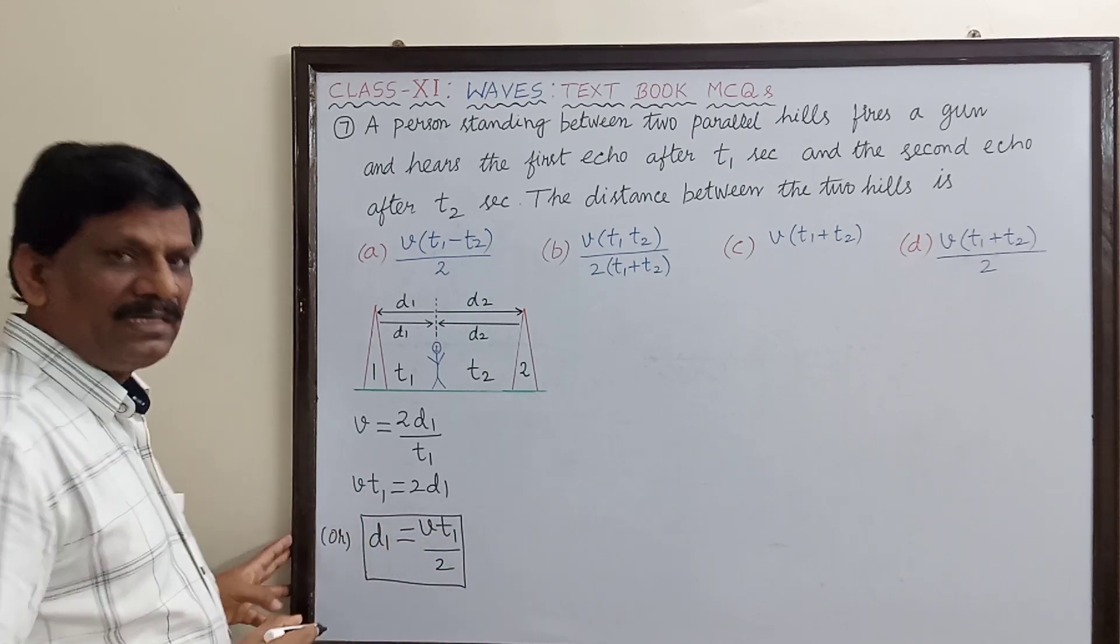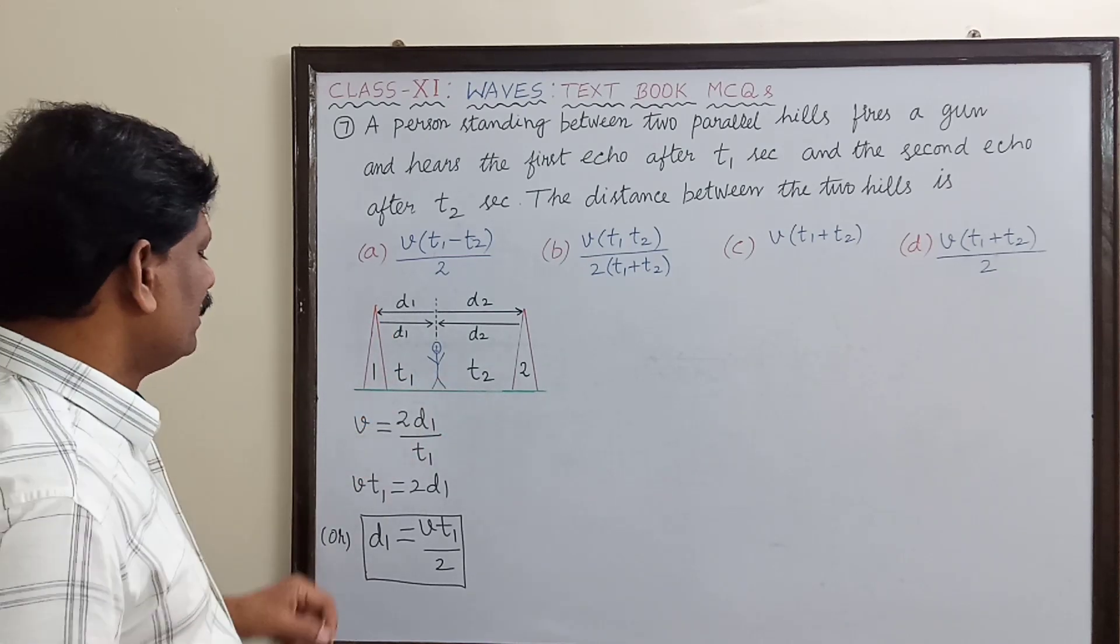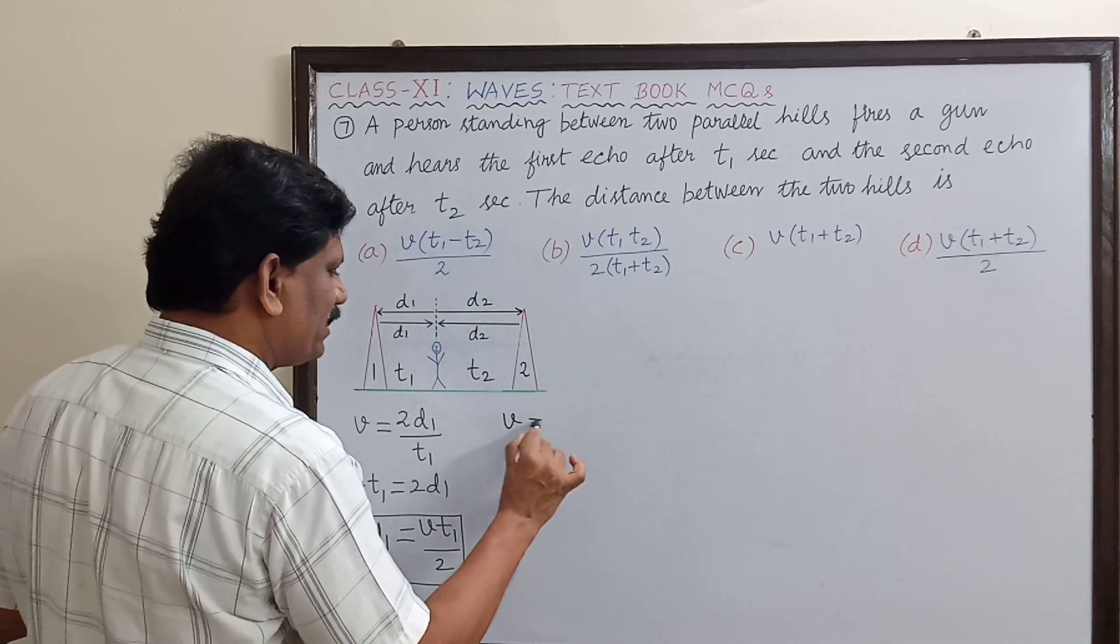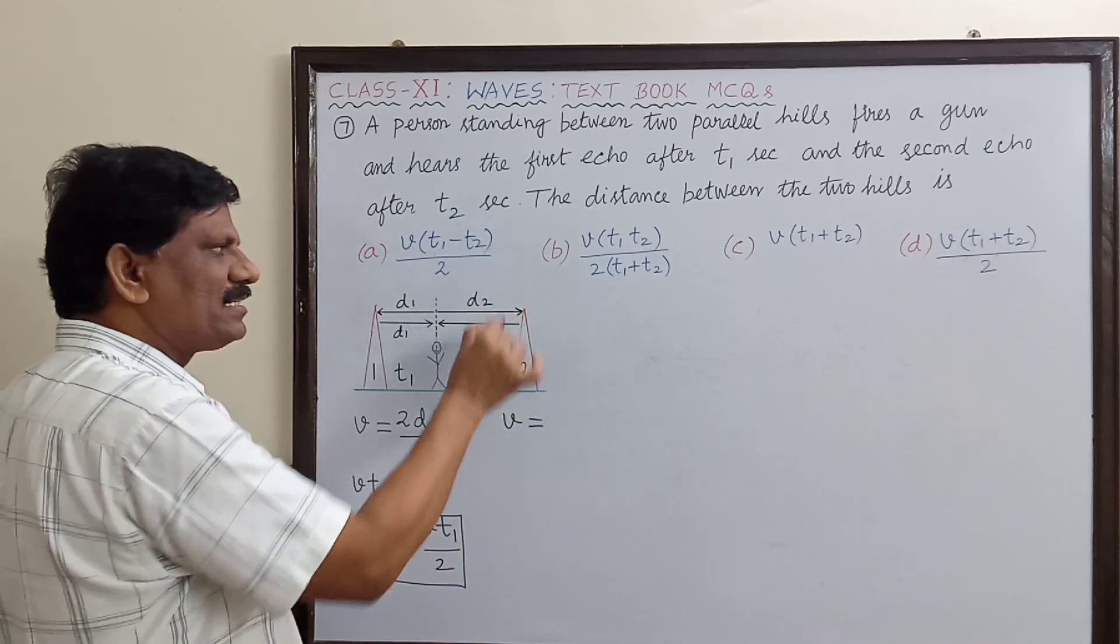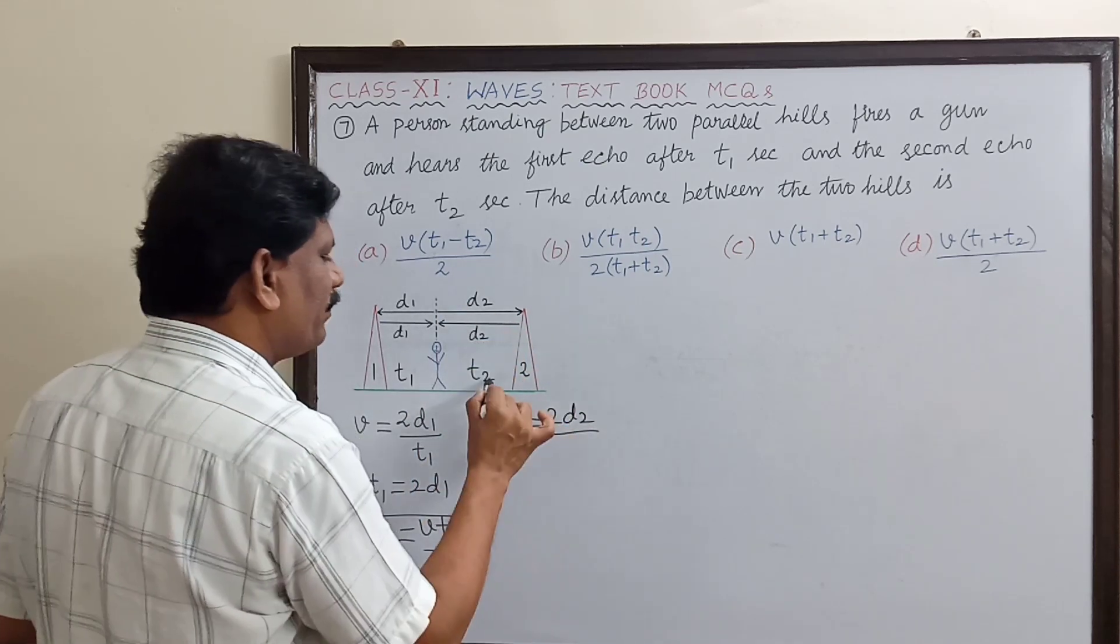So this is the distance of the first hill from the person. Similarly, for the second hill, if I write another equation, the velocity is equal to the distance traveled, d2 plus d2, that is 2d2, divided by the time taken, t2.